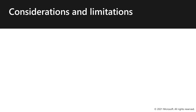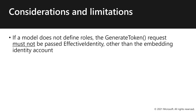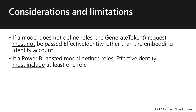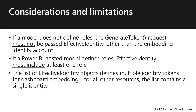There are also considerations and limitations to bear in mind. If a model does not define roles, the generate token request must not be passed effective identity other than the embedding identity account. If a Power BI hosted model defines roles, effective identity must include at least one role. The list of effective identity objects defines multiple identity tokens for dashboard embedding; for all other resources, the list contains a single identity. In the next video, I'll demonstrate enhancing my app by configuring data permissions.